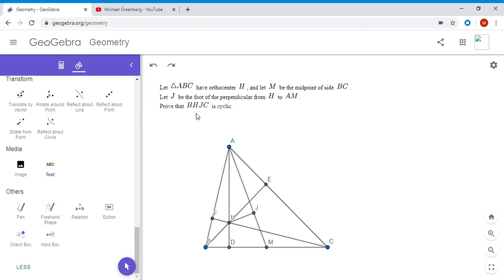So the approach that I'm going to use in this problem is one that I've used a number of times. You try to find a bunch of cyclic quadrilaterals and then use the radical axis theorem. We have a lot of right angles in this figure, and when you have a lot of right angles it's very suggestive of cyclic quadrilaterals.